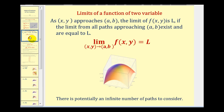Now if we consider a limit of a function in two variables, as (x, y) approaches (a, b), the limit of f(x, y) is equal to L if the limit from all paths approaching (a, b) exists and are equal to L. So what this is saying is: in order for that limit to exist, it doesn't matter which direction we approach this point — the limit must always equal L. There's an infinite number of paths that we could consider to determine if that limit exists.